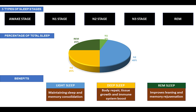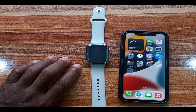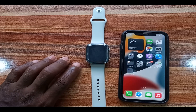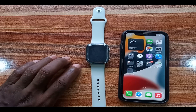Deep sleep also boosts the immune system, and bed wetting normally occurs during the deep sleep stage. The final stage, the REM sleep stage, plays an important role in memory rejuvenation. The native sleep tracking app introduced with WatchOS 7 can track your total sleep time, but it cannot track your sleep stages — for that you'll need a third-party app, which we'll discuss later.